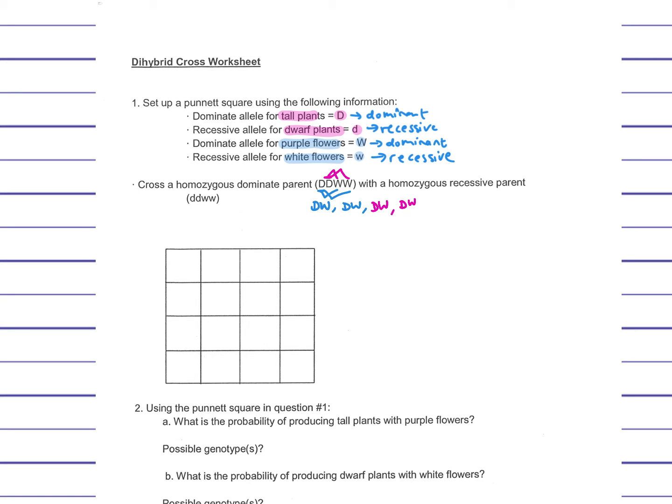So it's the same principle for this one. The small D can go with a small W, so it's going to be dw, or the other dw, and all of those are going to be dw, because those are the only options of combinations of the alleles.